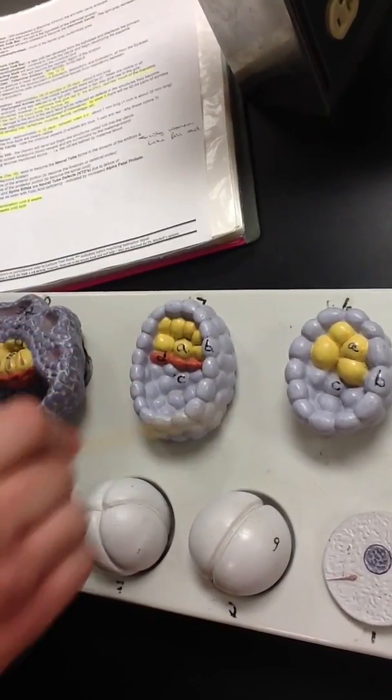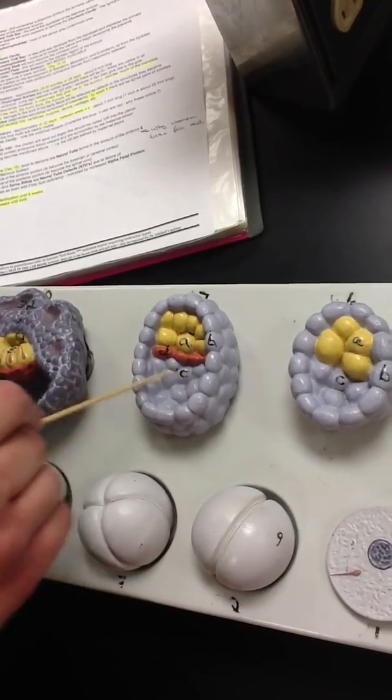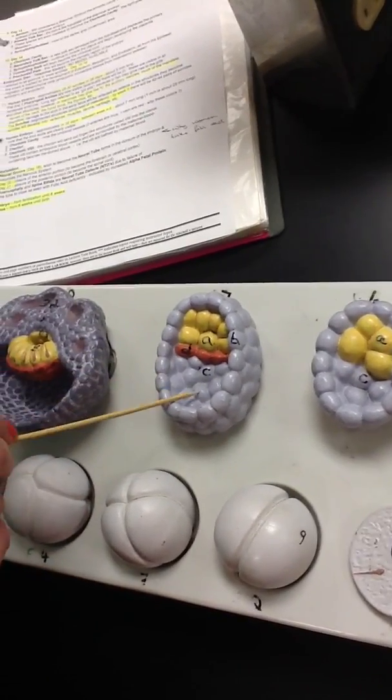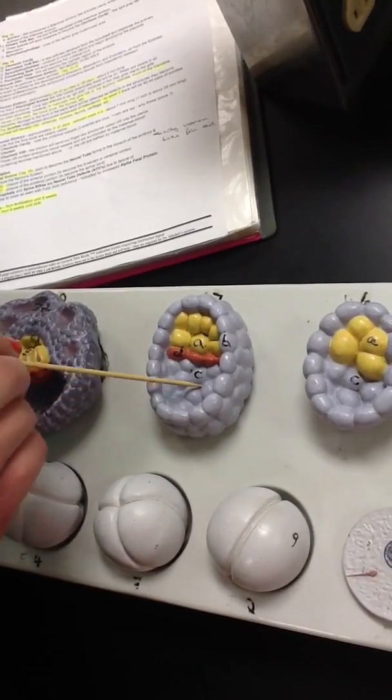Then we have the trophoblast, which again is this outer wall, and the blastocoel, which is this fluid-filled area that will be lined by the mesoderm to become the primary yolk sac.